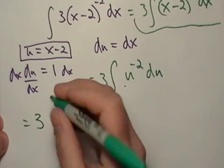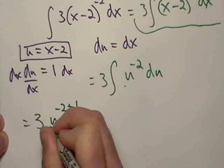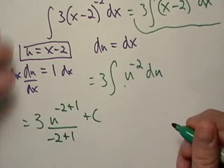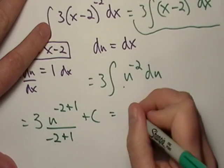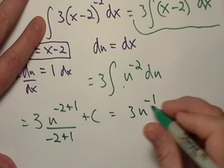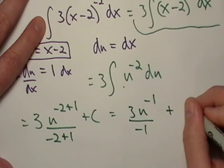So this is just going to be u to the negative two plus one over negative two plus one plus c. Ok, so that's going to equal three u to the negative one over negative one plus c.